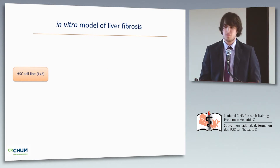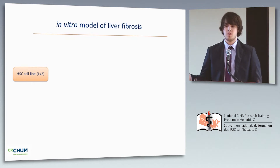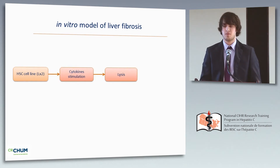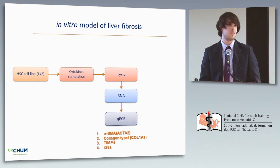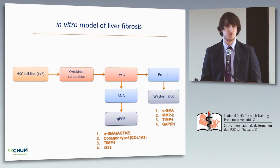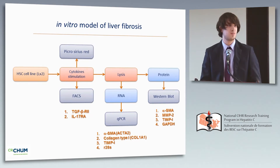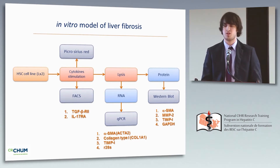We developed a model based on the human hepatic stellate cell line LX2 cells, stimulated with cytokines. After 48 hours of stimulation, we looked at the expression of pro-fibrotic genes by qPCR — mainly smooth muscle actin, collagen type 1, and TIMP1 — and validated expression by Western blot for smooth muscle actin and TIMP1. For collagen type 1, we performed picrosirius red staining. Finally, we did flow cytometry experiments to look at the expression of the TGF-beta receptor and the IL-17 receptor.